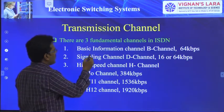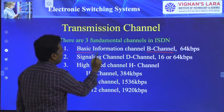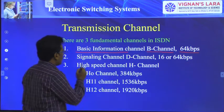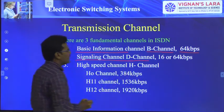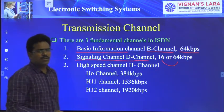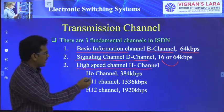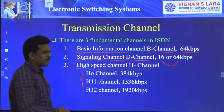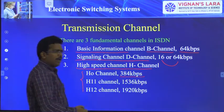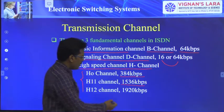There are three fundamental channels in ISDN. One is called the B-channel — B means Basic Information Channel — which is 64 kbps. Another is the D-channel, also called the Signaling Channel, which is either 16 or 64 kbps. The third is the H-channel, called High Speed Channels, which contains three sub-channels: H0 uses 384 kbps, H11 uses 1536 kbps, and H12 uses 1920 kbps.